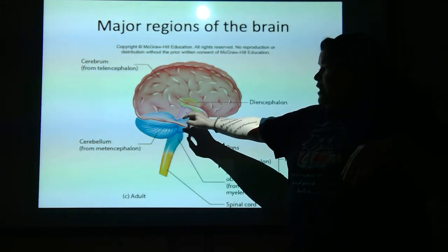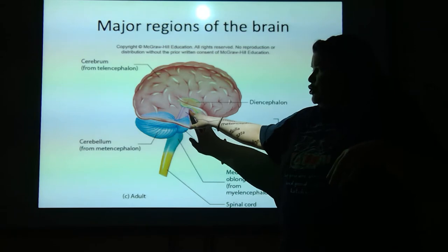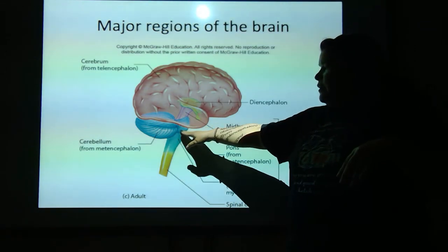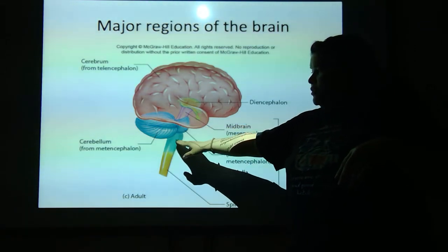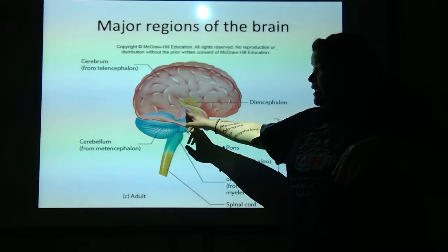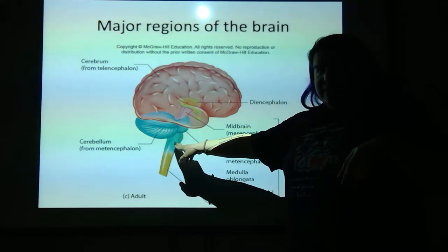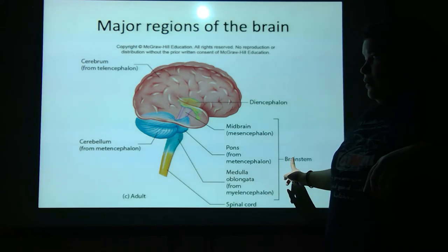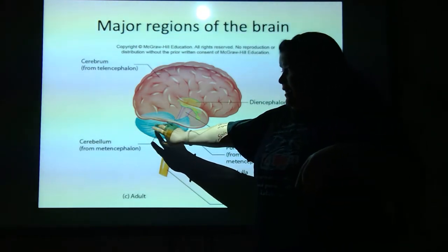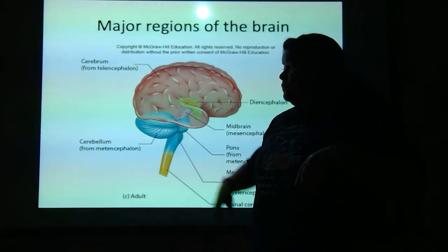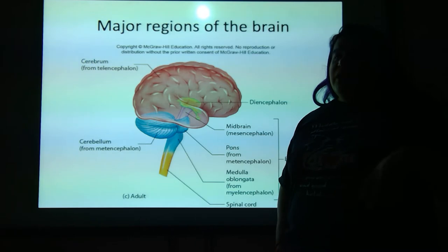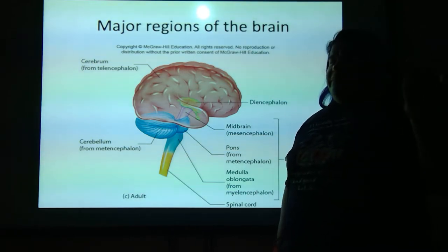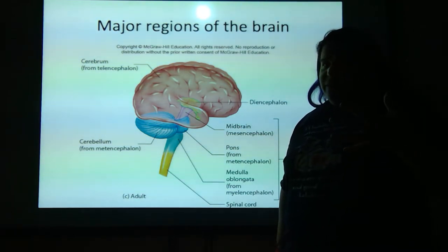The midbrain is just this lavender portion right here. And then the pons and the medulla oblongata — these three things consist of the brainstem. And back here, you've got the cerebellum, which literally translated means 'little brain.'